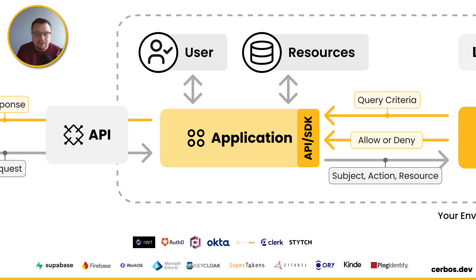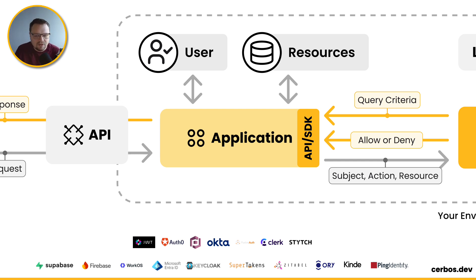Now, inside your application code, what you typically do is have a lot of if-else statements. So if user role equals admin, then allow the request. If user role equals manager, then only allow the request under some circumstances. And that hard-coded logic will kind of be sprinkled around your application code and gets kind of hard to manage and maintain.